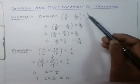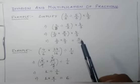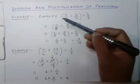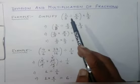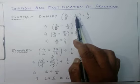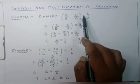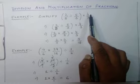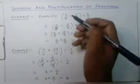Let us take an example: simplify (2/3 divided by 5/3) multiplied by 4/3. In these types of problems, the first thing you have to keep in mind is that whatever is given inside the bracket, we have to solve that first. After that, whatever answer we get, we multiply it with the fraction given outside.